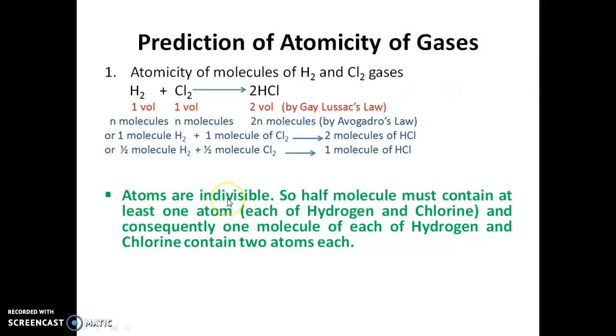Now, you will know that atoms are indivisible. So, half molecule must contain at least one atom each of hydrogen and chlorine. So, consequently, one molecule of each of hydrogen and chlorine contains two atoms each.